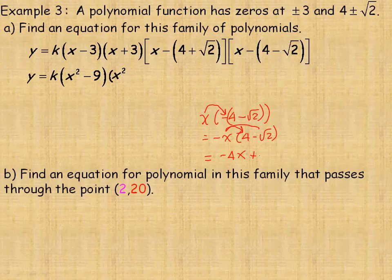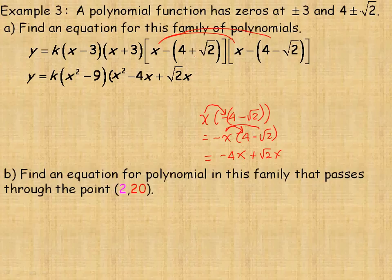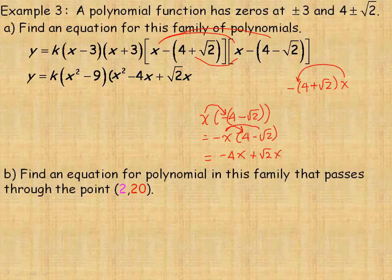Now multiplying x by negative (4 plus root 2): that gives negative 4 times x, which is minus 4x, and then negative root 2 times x, which is minus root 2x. So combining, the linear terms from these two factors are minus 4x plus root 2x and minus 4x minus root 2x.